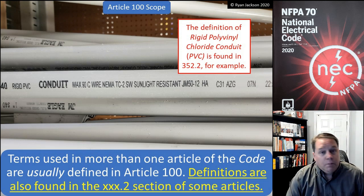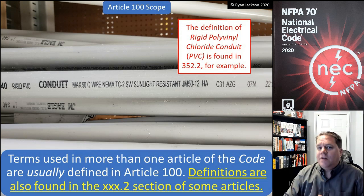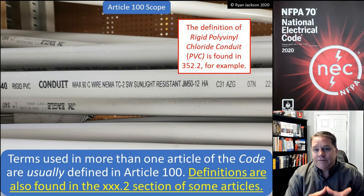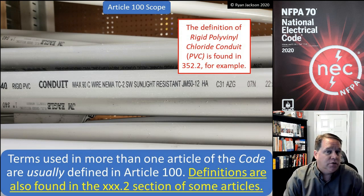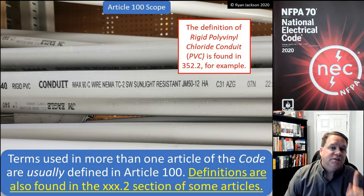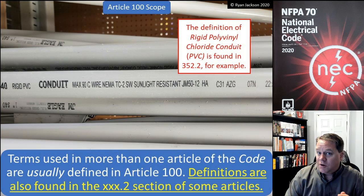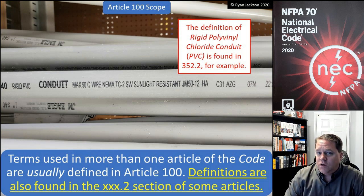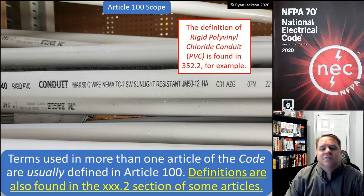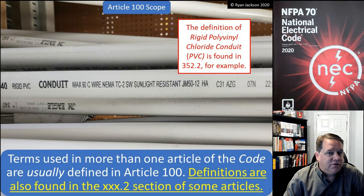Terms used in more than one article of the code are supposed to be defined in Article 100 — that's how Article 100 works. Not every definition in the NEC is found in Article 100; only definitions used in more than one article are found there. At least that's the way it's supposed to work. In the 2020 code they added language — highlighted in yellow — saying that definitions are also found in the .2 sections of some articles.